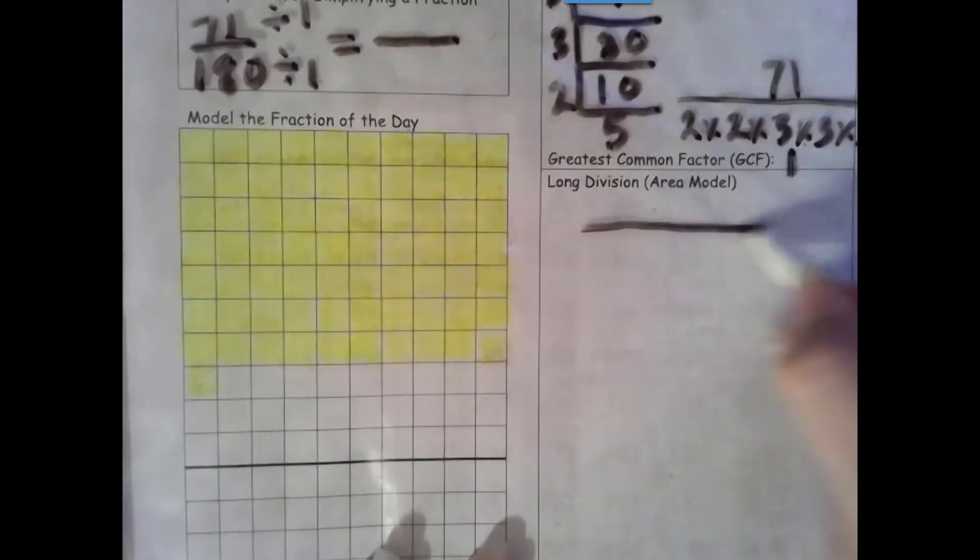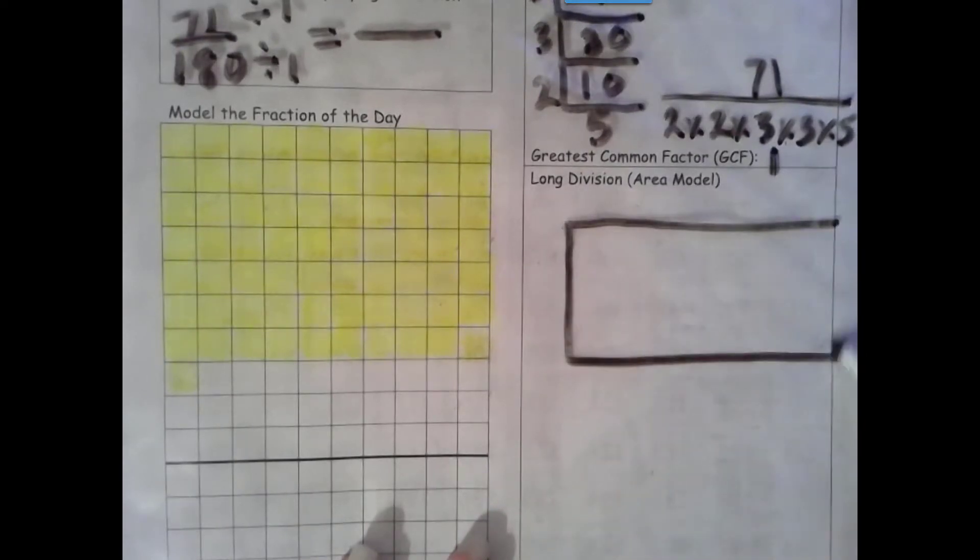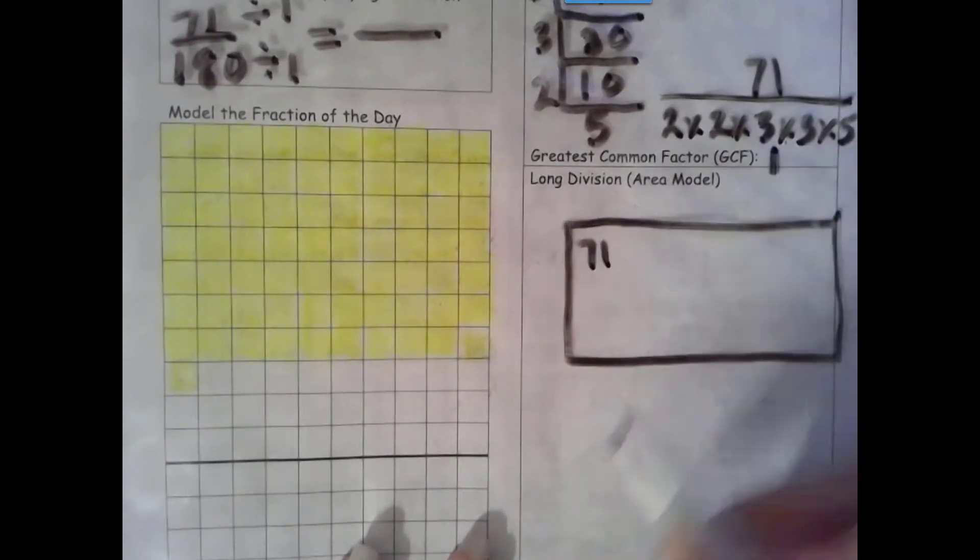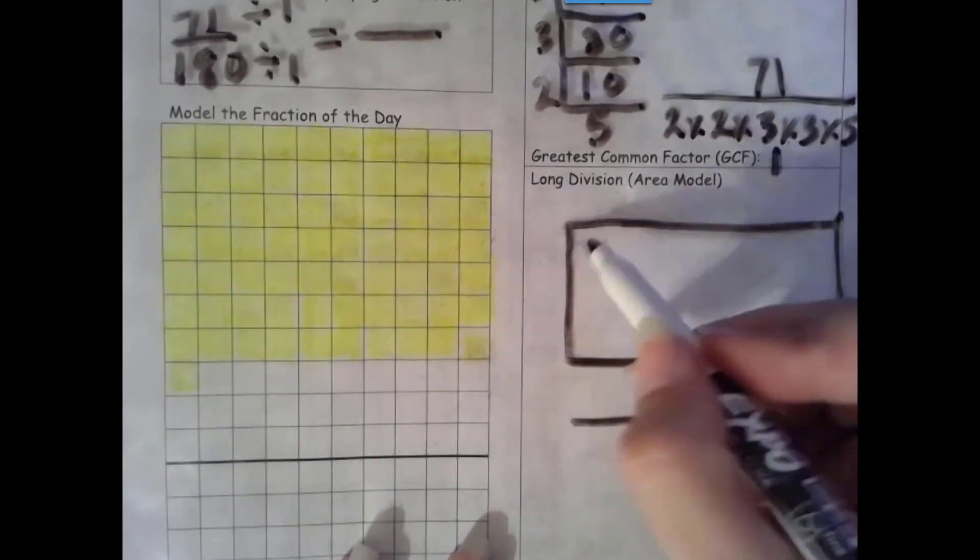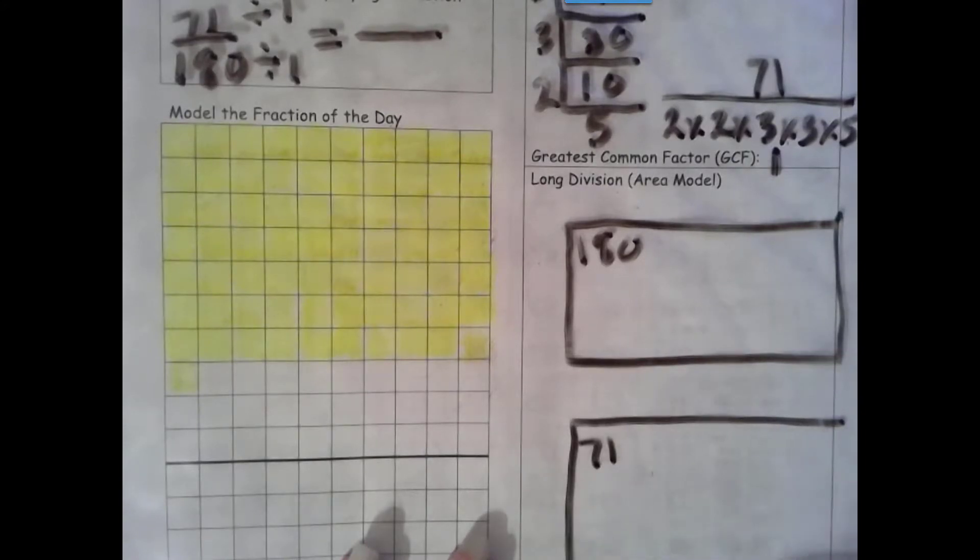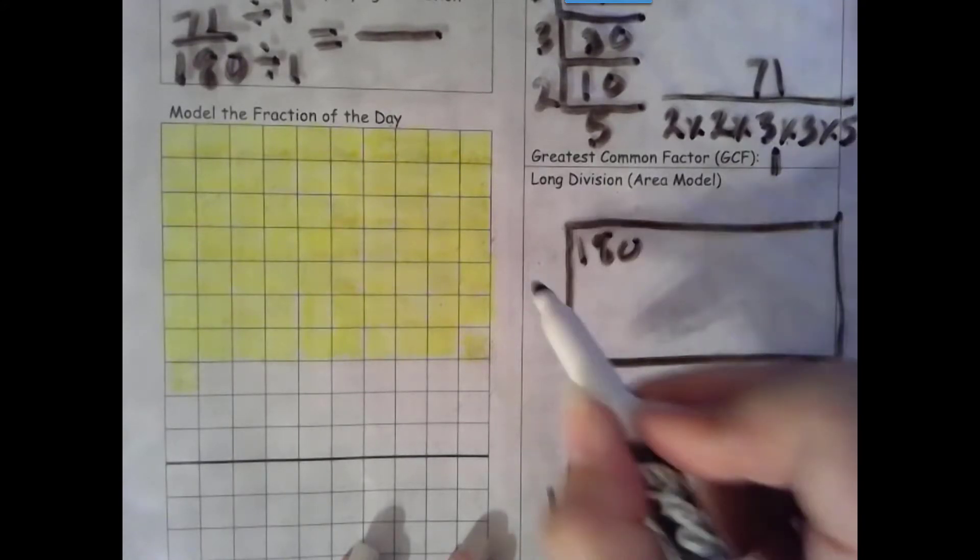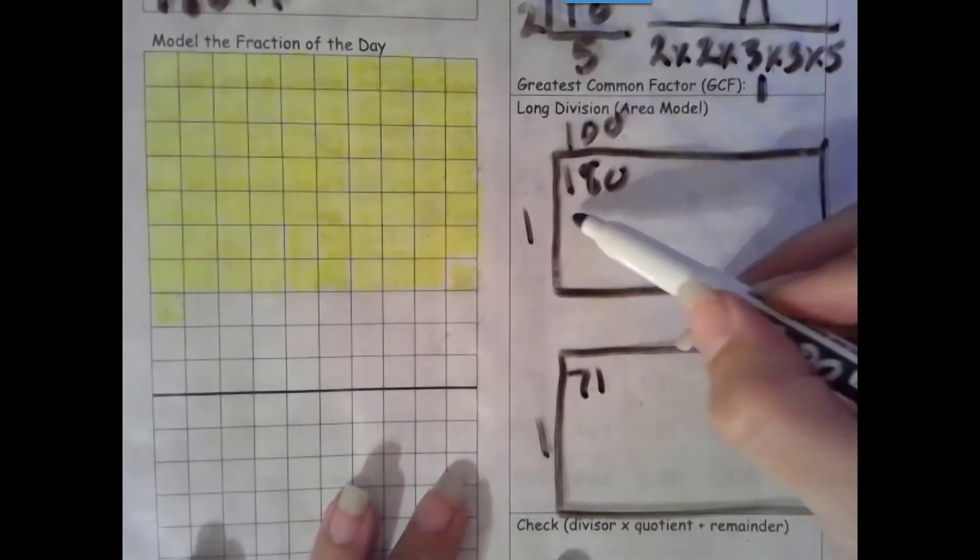I'm going to put 71 in our area model. I'm sorry, 180 up here and 71 down here, and we're dividing by 1.